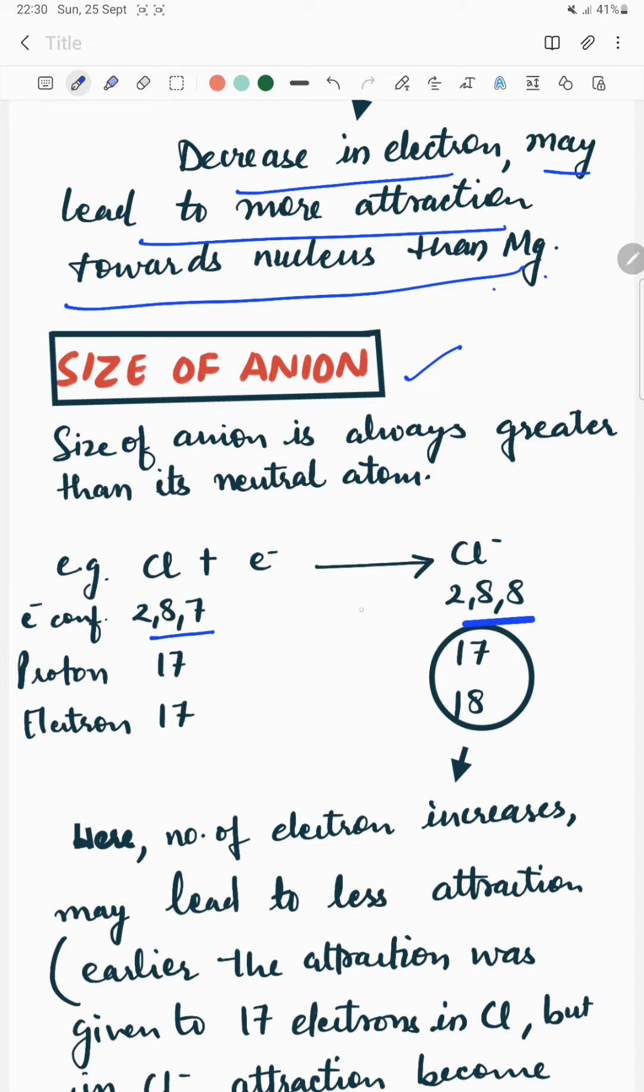Similarly, in case of anion, the electronic configuration is 2,8,7 and 2,8,8 in case of chlorine negative. Here, proton is 17 and electron is same, 17 and 17. But in chloride ion, 17 is proton and electrons are 18 in number.